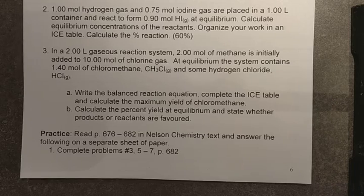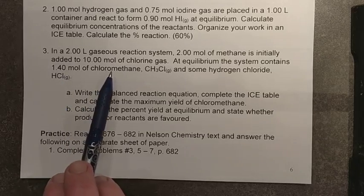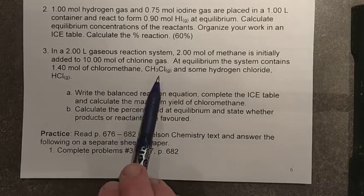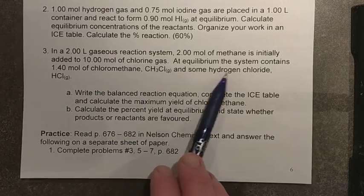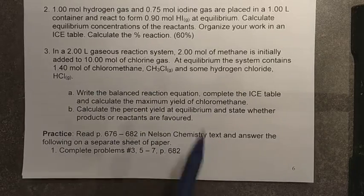At equilibrium, the system contains 1.4 moles of chloromethane, CH3Cl, and some hydrogen chloride, HCl.